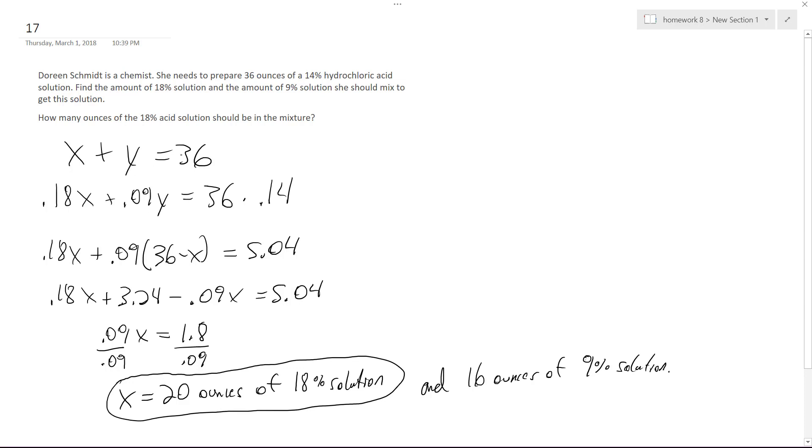So what I do is I set up the first equation so I get Y equals 36 minus X as a substitution. So I get 0.18X plus 0.09, and then sub in for Y equals 5.04. That's 36 times 0.14.